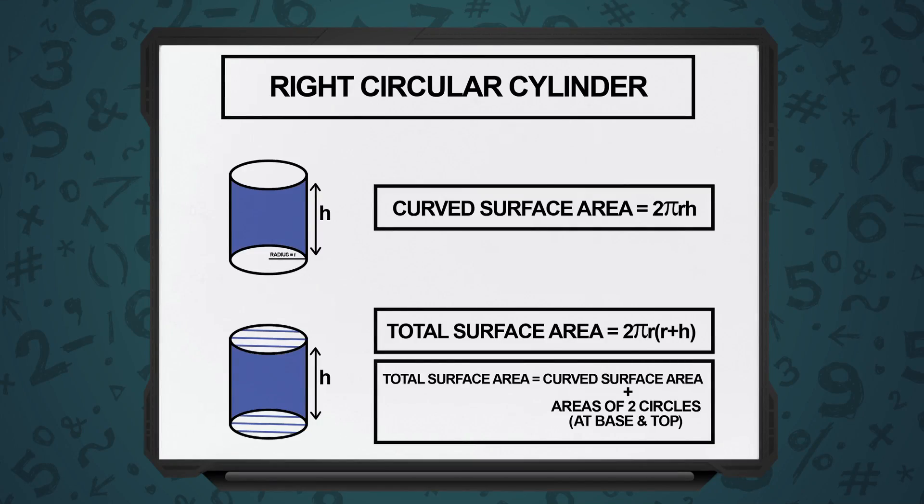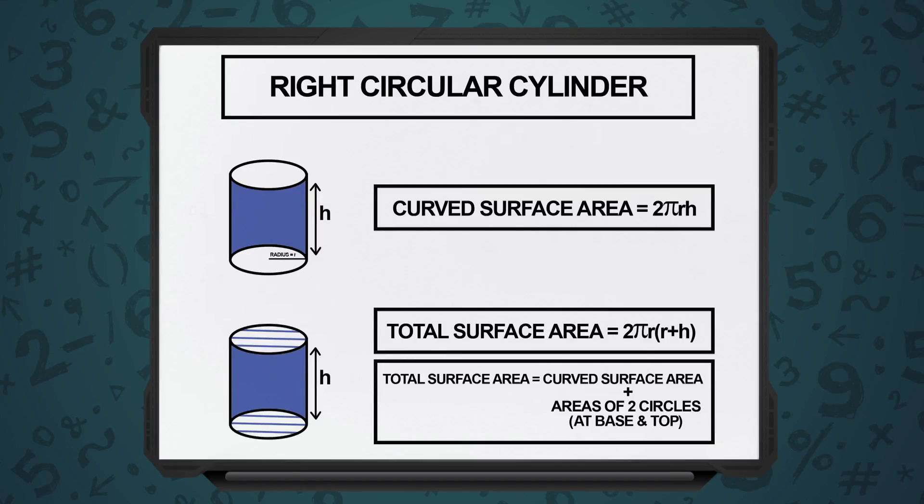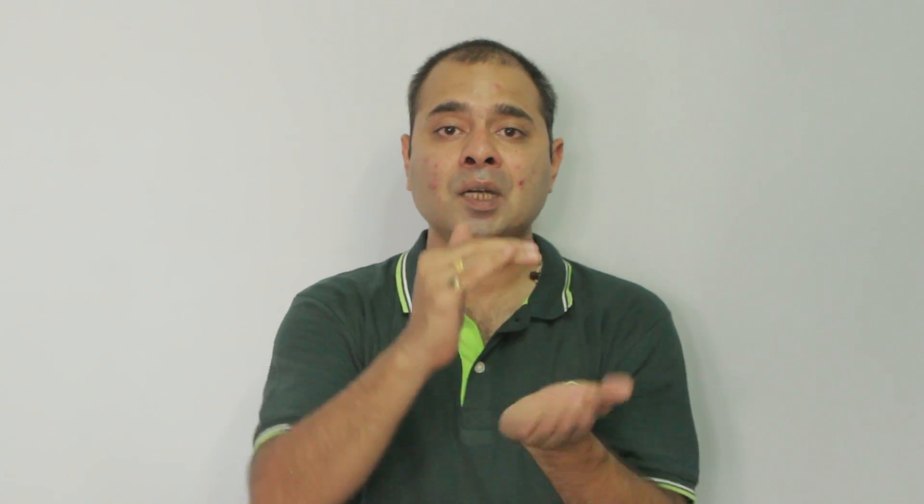You would have the curved surface area and the total surface area. Now in case of a right circular cylinder, we could have the curved surface area ignoring the base and the top, or we could have the total surface area, which is the curved surface area plus the area of the circle at the base and the area of the circle at the top.